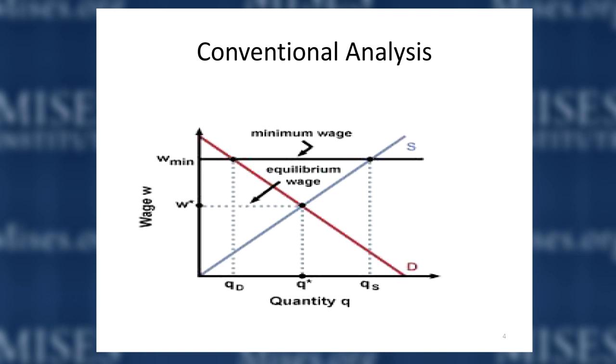This is the conventional supply and demand analysis. You have an upward-sloping supply curve and a downward-sloping demand curve, and their intersection creates an equilibrium wage. The minimum wage is set above that equilibrium, meaning more people enter the low-skilled job market while employers want fewer workers — quantity demanded goes down. But price theory is not everything. There are a lot of other things that can change besides price and quantity as a result of a price floor like the minimum wage.